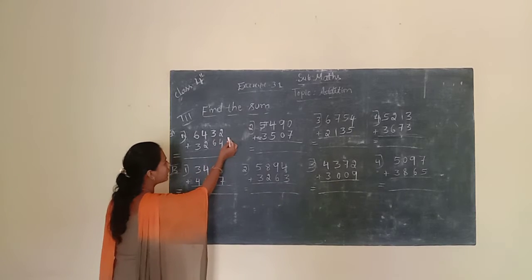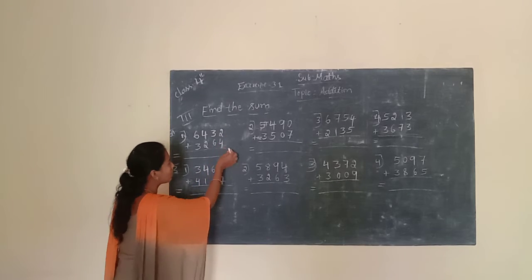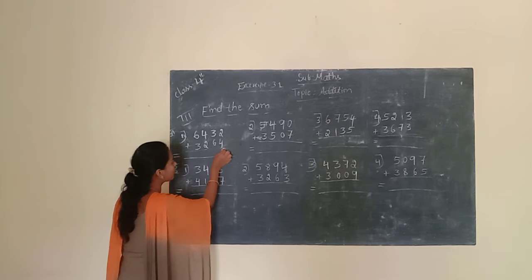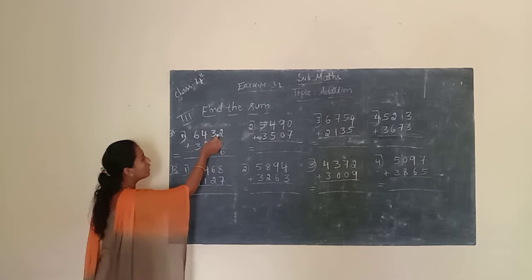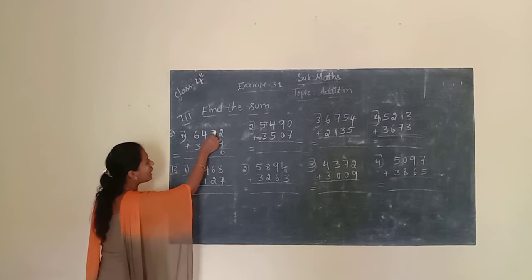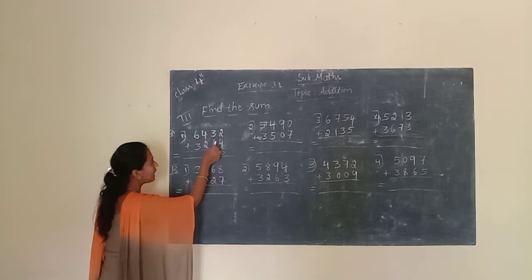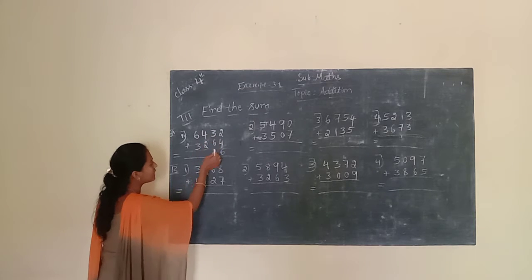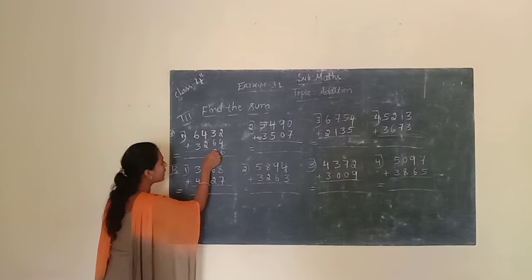First, we have to start at the unit place. 2 plus 4 is how much? 2 plus 4 is 6. We have to write 6. Next, move to the 10th place. 10th place is 3 and 6. 3 plus 6 is how much? 3 plus 6 is 9. We have to write 9.